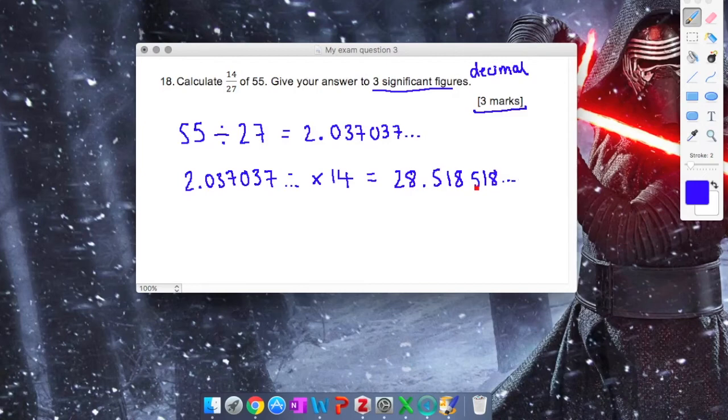Now that is my answer, but I need to give it to three significant figures. That answer to three significant figures is 28.5. And that is 14 over 27 times 55.